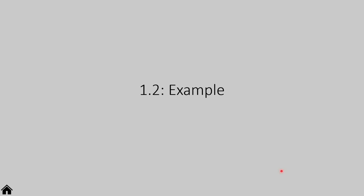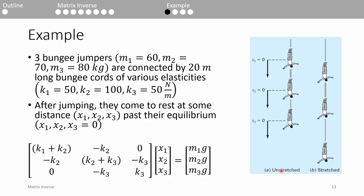There's been a lot of concepts in this video so far, so let's do a quick example. Suppose we have three bungee jumpers of various masses. Each jumper is connected by a bungee cable of various elasticities, which we represent by a spring constant, k.